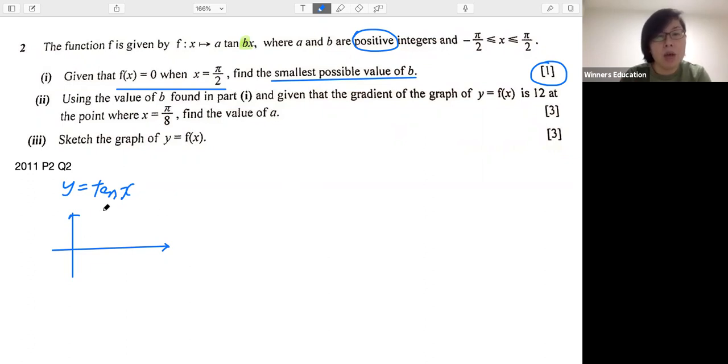So I'm going to show you one cycle of tangent graph. It looks like this. And one cycle, it takes π.